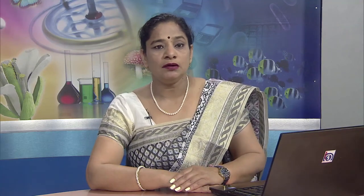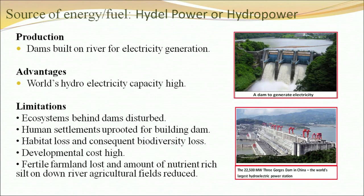Nuclear energy is produced by nuclear fission and fusion. Its advantage is no air pollution and fuel efficiency. Limitations include high cost of construction of nuclear plants, fear of security and nuclear accidents, and problems of safe disposal of nuclear waste. Hydro power is generated by dams built on rivers. Its advantage is high hydroelectricity capacity, but limitations include ecosystem disturbance behind dams, uprooting of human settlements, habitat and biodiversity loss, and high developmental cost.